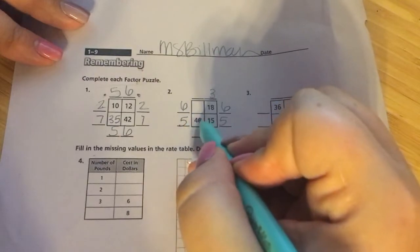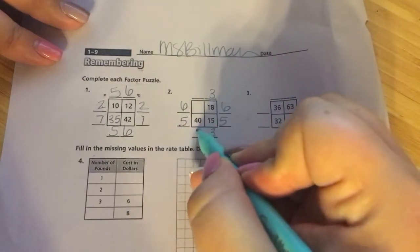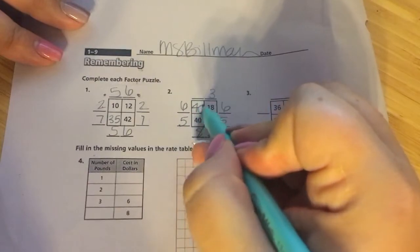5 multiplied by 3 gives me 18. 3 is the column. 3 multiplied by 6 is 18. It gives me the row of 6.